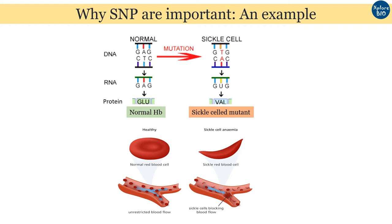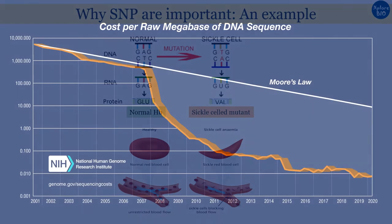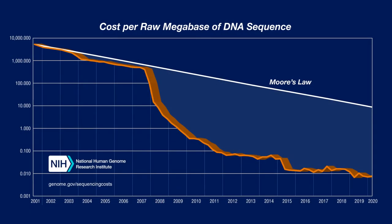In a similar manner, there are different traits that may be affected by single nucleotide variation. In recent years, as the cost of sequencing the whole genome and transcriptome has been remarkably reduced, it is easy to identify SNPs in the genome. These are some of the reasons why SNPs are very popular today.